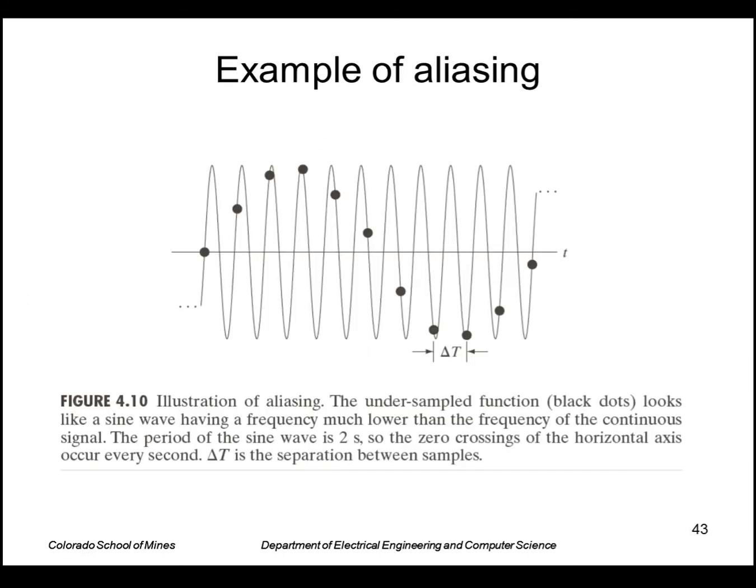Here's a simple example of aliasing of a one dimensional function. We have a sine wave that we've sampled at these black dots. But when we reconstruct that, we would reconstruct a sine wave of a much lower frequency. So that's something that wasn't there in the original. We would see some low frequencies that were not there in the original.